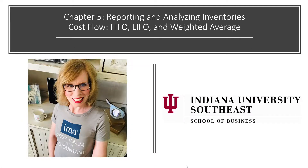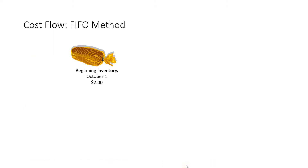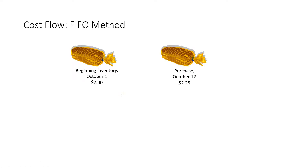I'm going to demonstrate a simple example of cost flow using FIFO, LIFO, and weighted average. Really simple example — going to be an extremely small grocery store, and I'm going to start the period October the 1st with one loaf of bread at $2 that I paid for it, and I'm just going to make a purchase of one additional loaf of bread on October the 17th at $2.25.